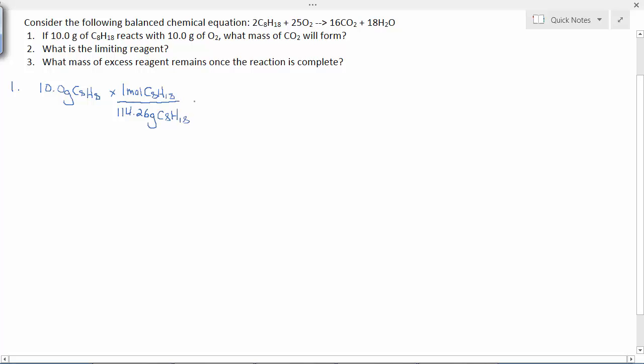My advice would be to handle this as if you were doing two separate mass-mass problems. Start with the first quantity provided, so convert 10 grams of C8H18 into grams of carbon dioxide. The question asks for mass carbon dioxide, so it tells you which product to look for.